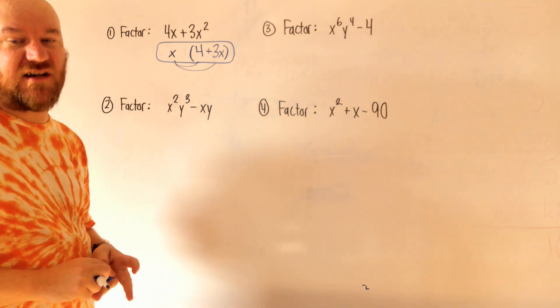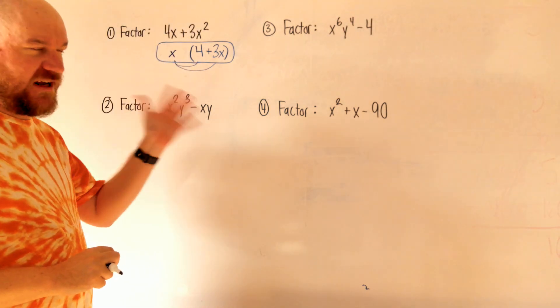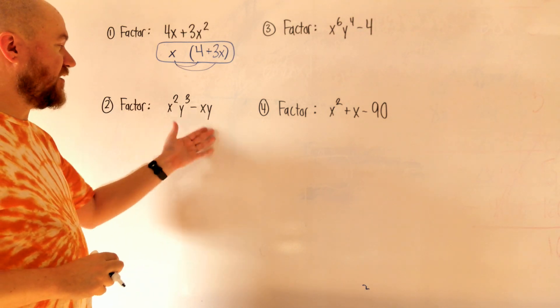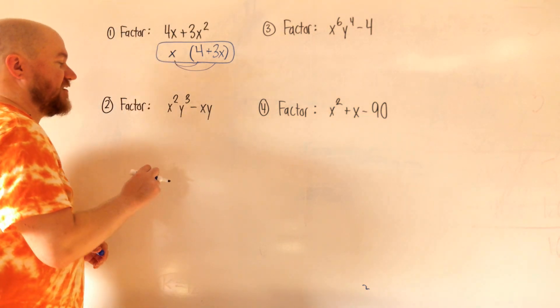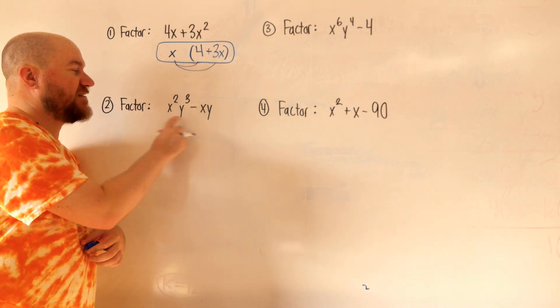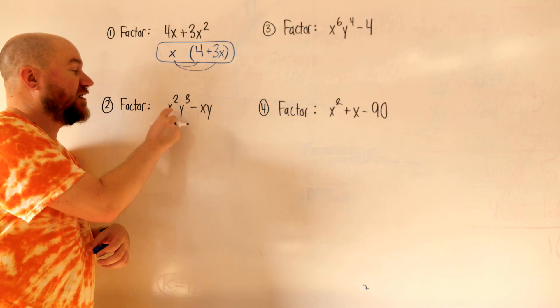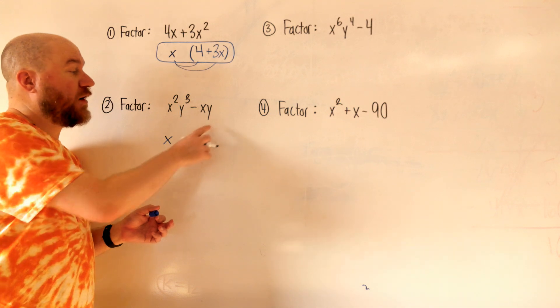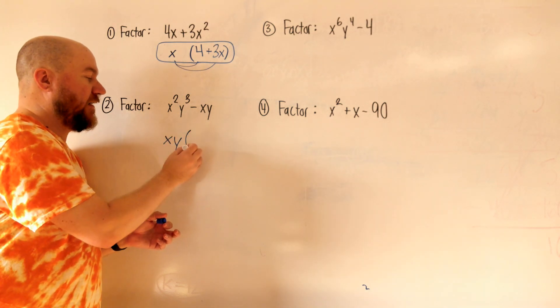Question two is also a greatest common factor question — always try that first before any other factoring method. Right away you'll notice both terms have x's and y's, so the greatest common factor is going to involve x's and y's. How many x's can I take from both terms? This has x squared, this only has x, so the most I can take from both is x. Same with y: one y here and three y's here, so I can't take more than one y. Then I'll set up my parentheses.